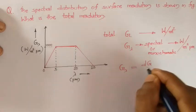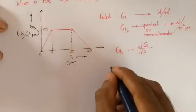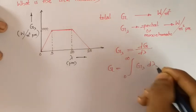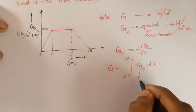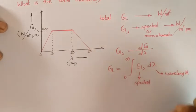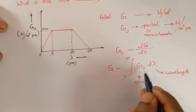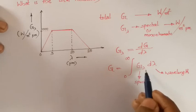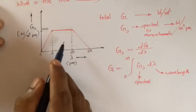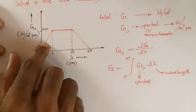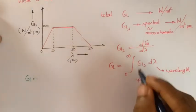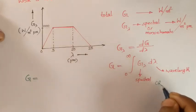Since G_lambda equals dG by d_lambda, total irradiation G equals the integral from 0 to infinity of G_lambda d_lambda. This means total irradiation is simply the area under the G_lambda versus lambda plot. The spectral distribution shown has three parts: a triangle, a rectangle, and a triangle.